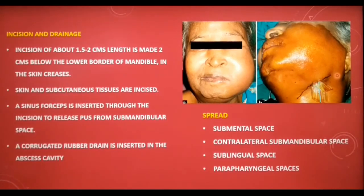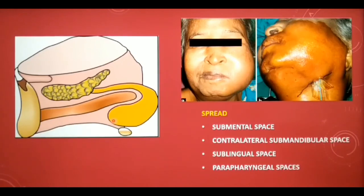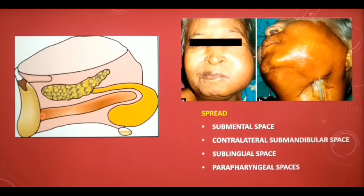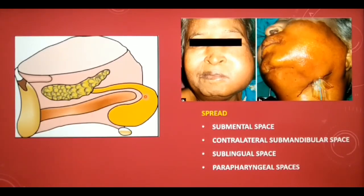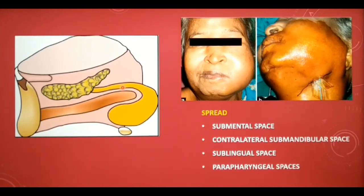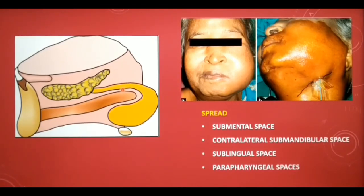Regarding the spread of infection from the submandibular space: there are no major anatomic barriers between the submandibular and submental spaces, so infection can extend into the submental space and the contralateral submandibular space. The submandibular space also communicates with the sublingual space around the posterior border of the mylohyoid muscle. Parapharyngeal spaces can also get involved with backward spread of infection. That concludes the discussion of submental, sublingual and submandibular space infections; the rest of the facial spaces will be explained in subsequent lectures.